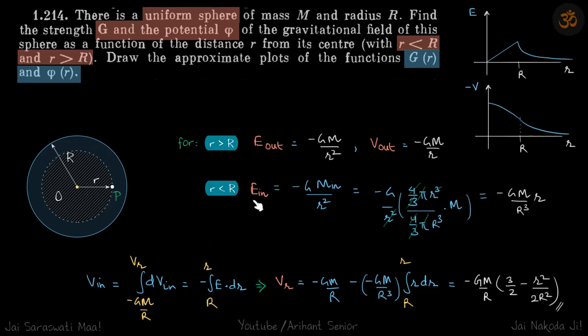So this is E_in as a function of r. Now we need to find potential inside as a function of r.